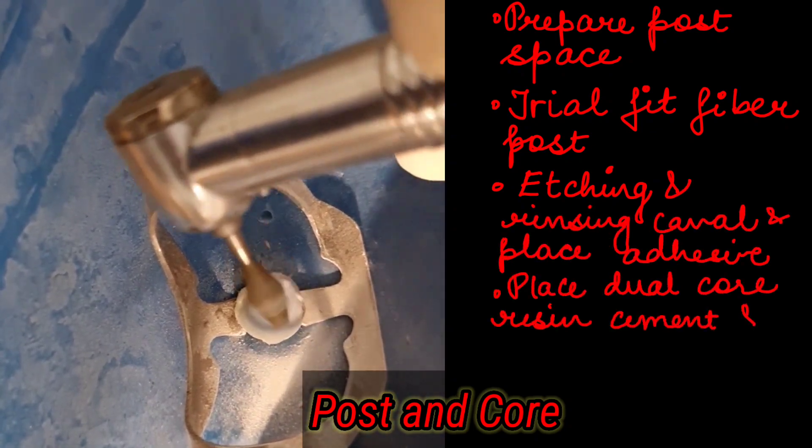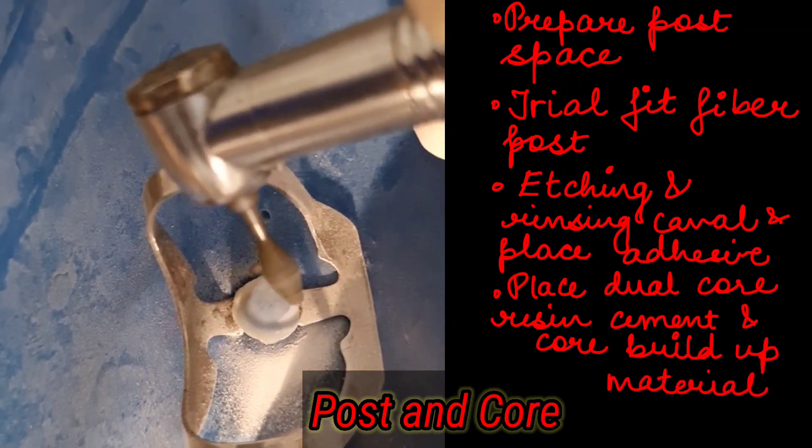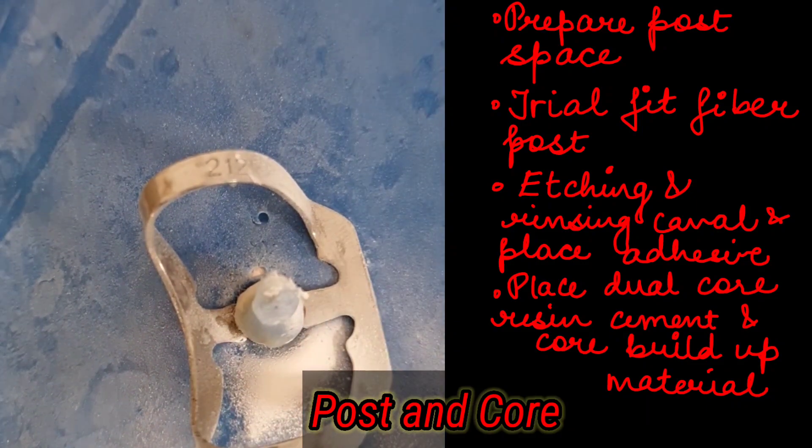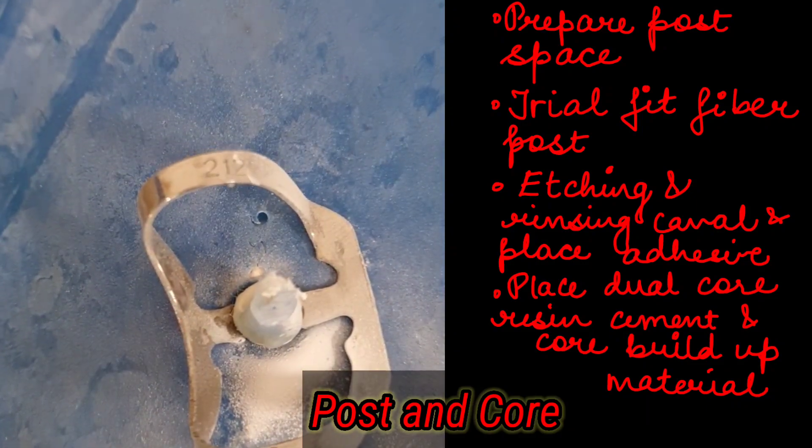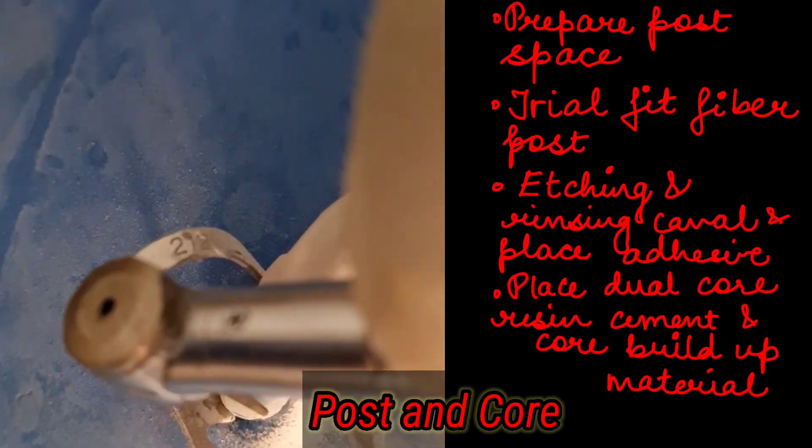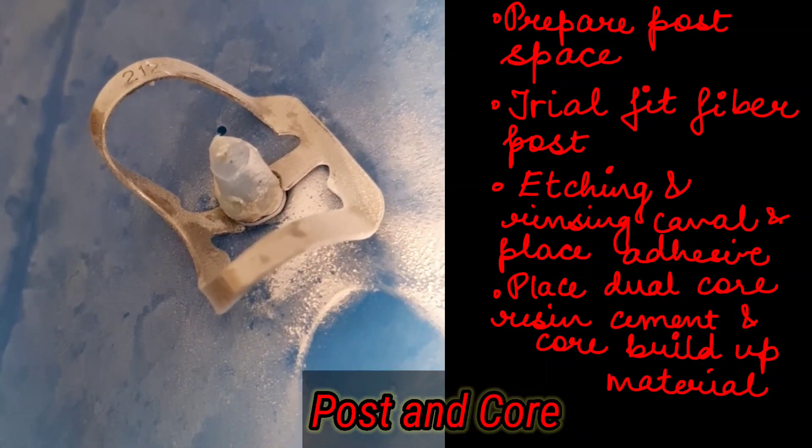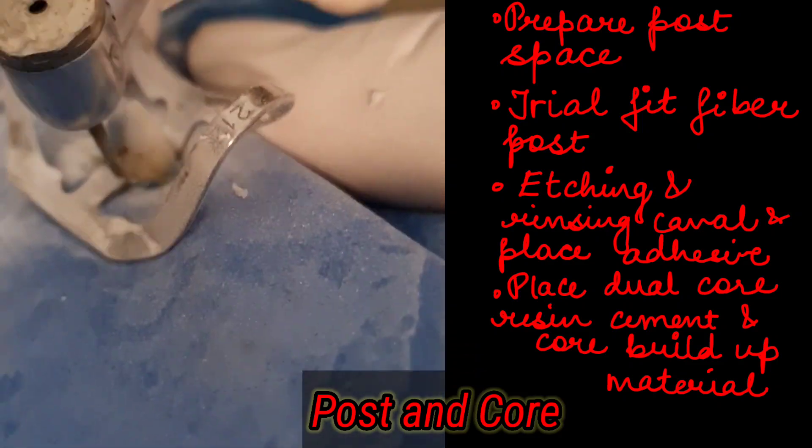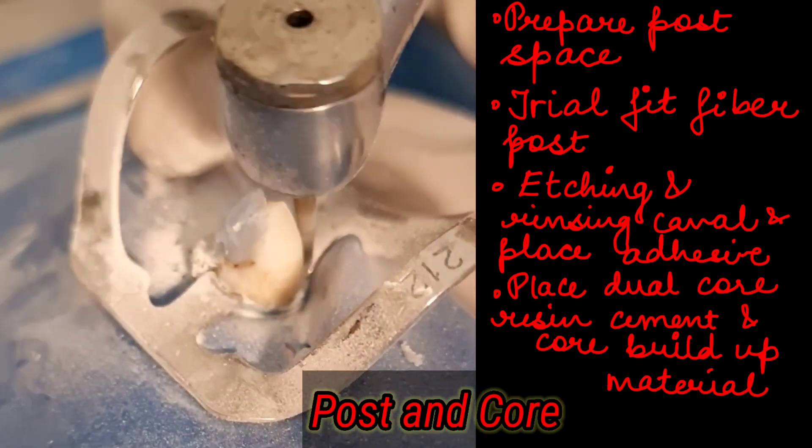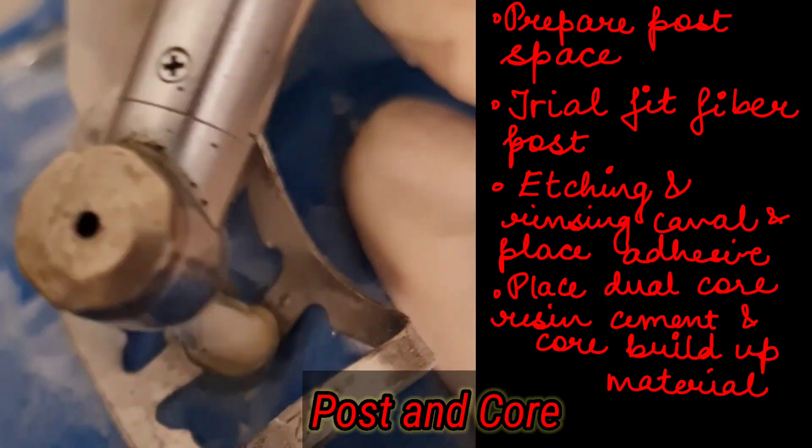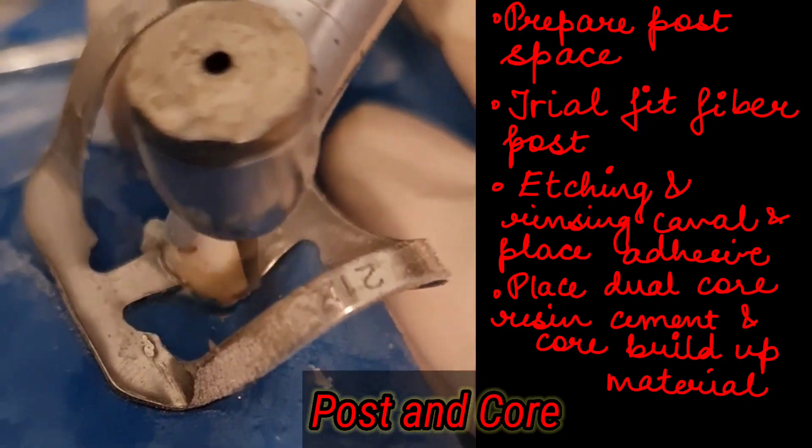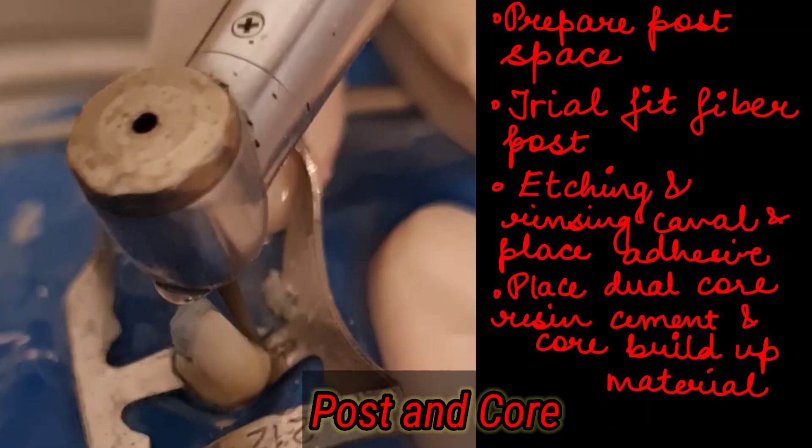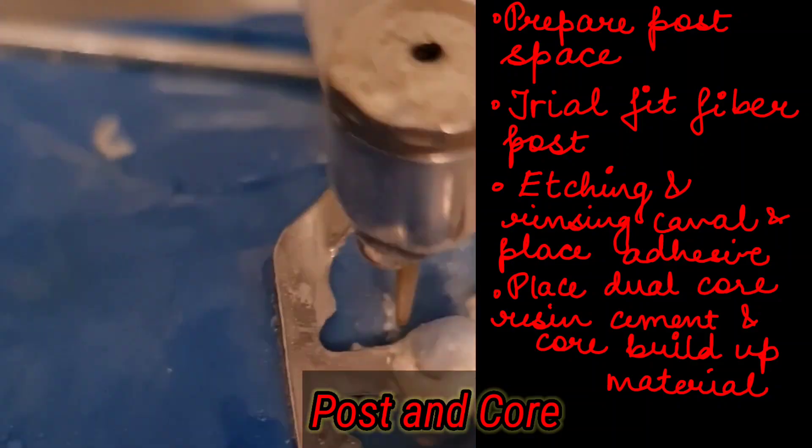Then we are going to trim the extra and we reshape the core. Despite the retention provided by the large surface of composite core, the final margin should be positioned in the dentine or enamel including at least two millimeters of the ferrule. You leave at least two millimeters of the ferrule—that is the structure present above the marginal line. Then we give it a shape that is similar to that of the tooth.